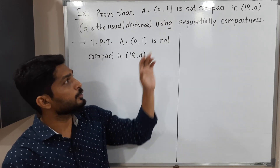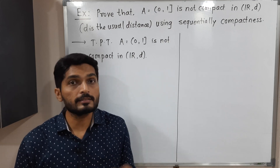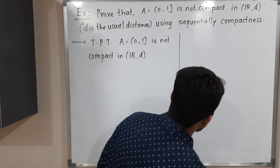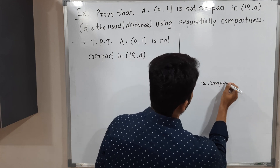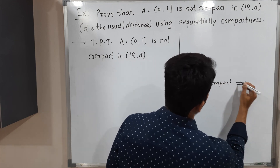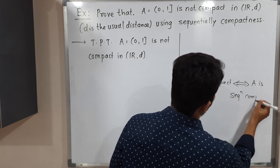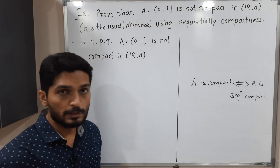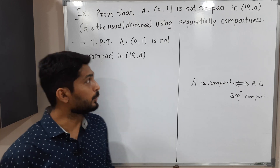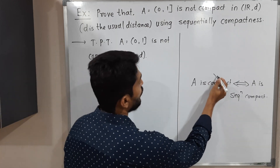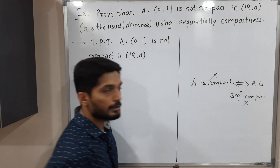We have to prove this using sequential compactness. There is one standard result we will use: A is compact if and only if A is sequentially compact. So every compact set is sequentially compact and every sequentially compact set is compact. Since we have to prove it is not compact, it is enough to prove that it is not sequentially compact.